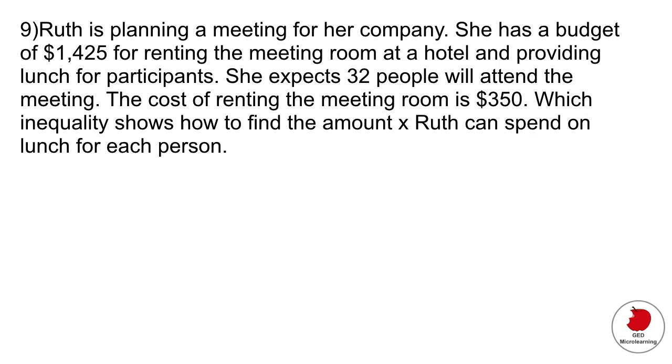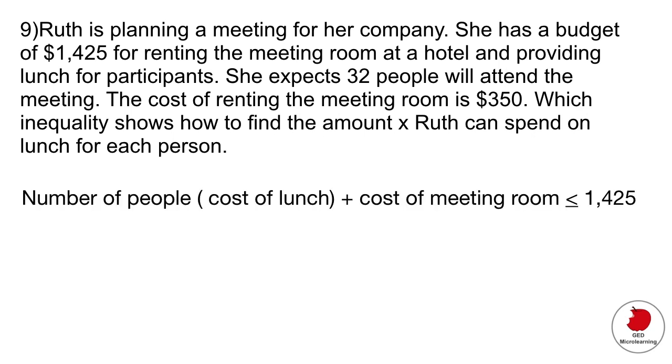Now, I always like to think about your equation in words first. We know that she has a number of people that are coming to the event, and she has to feed these people. So we have to multiply that by the cost of lunch, which would be x—we don't know what that is. Then she has a fixed cost for the meeting room. All of that together has to be less than or equal to $1,425. So all you're going to do now is pull those numbers from the question to fill out your equation.